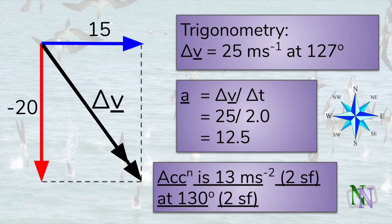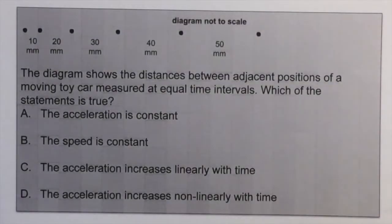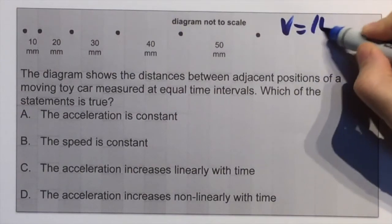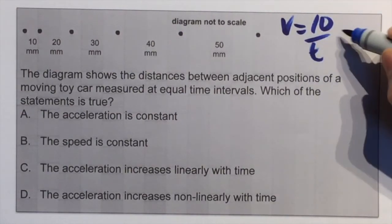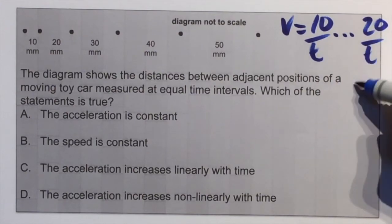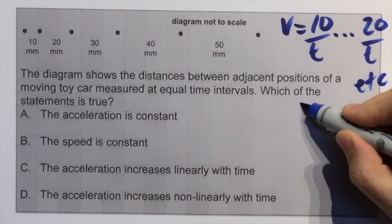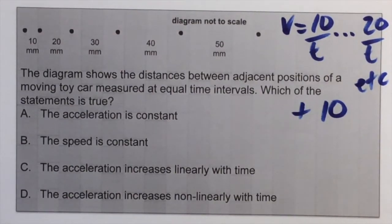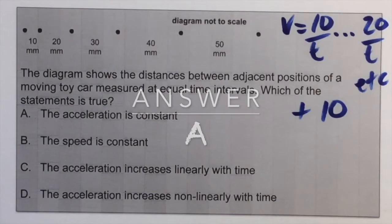The acceleration is given to two significant figures as 13 meters per second squared at 130 degrees. For the multiple choice question, the dots are made at equal time intervals. Looking at the respective speeds: first 10 over t, then 20 over t, then 30 over t. The time interval t is always the same, so the speed increments by equal amounts each time since the distances increment by 10 each time. This means the acceleration is constant, as the velocity changes by the same amount every interval.